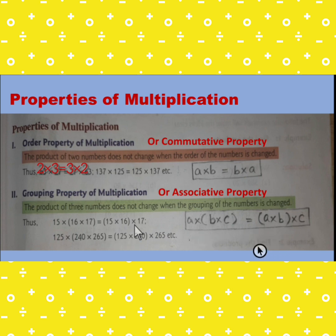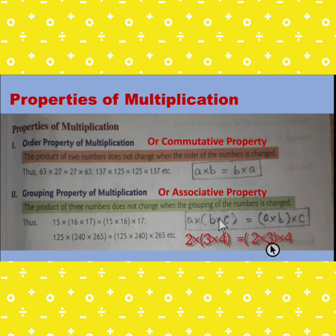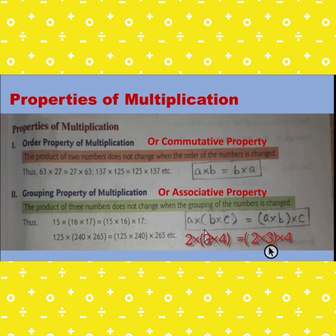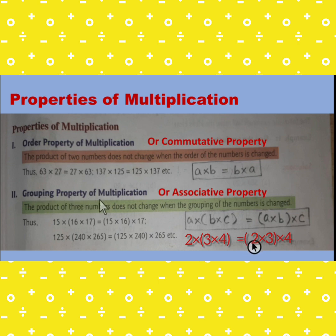For example, taking 2, 3 and 4: first multiplying 3 and 4 gives 12, then 2 into 12 gives 24. Alternatively, first multiplying 2 and 3 gives 6, then 6 into 4 gives 24. The result is the same. When the grouping changes but the result is the same, it is called the grouping property or the associative property of multiplication.